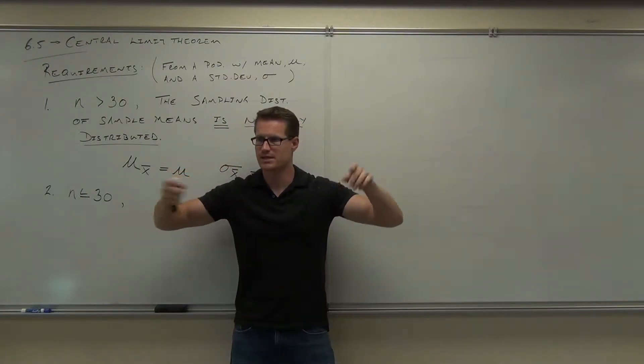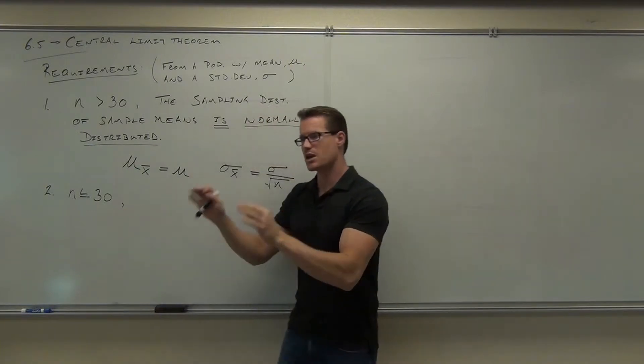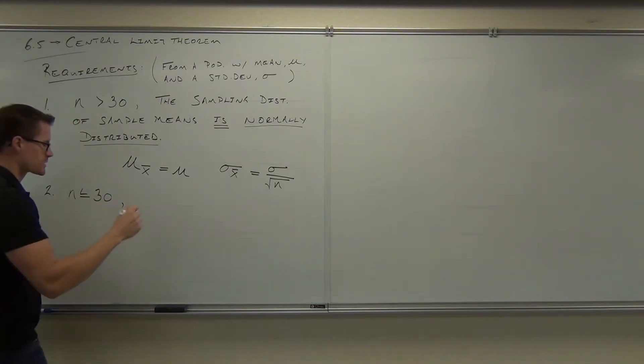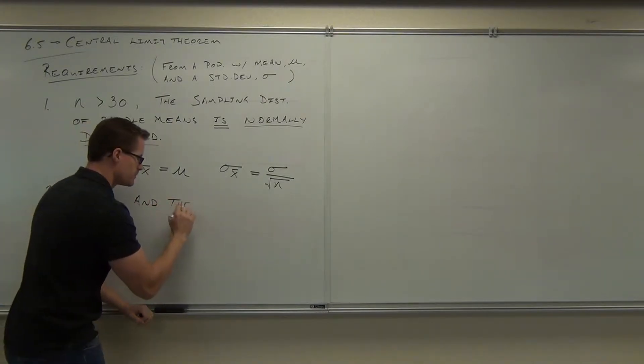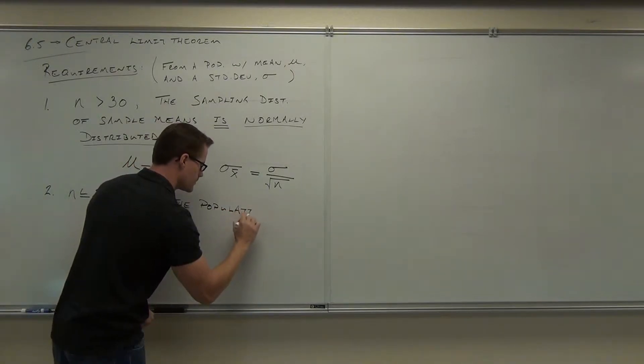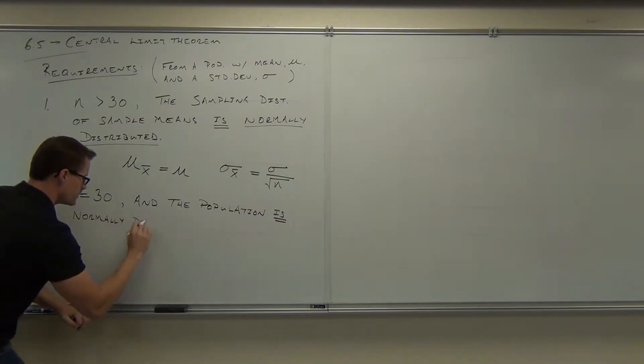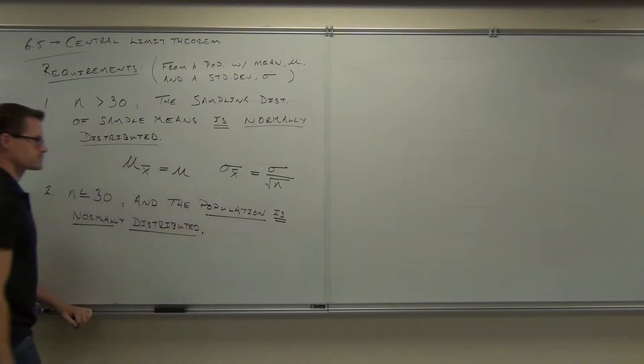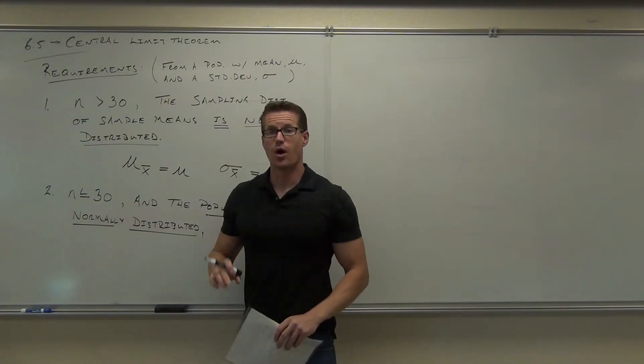If the population is normal, it should make sense that the samples are going to be normal when put in a distribution. Do you follow that logic? If the population is already normal, I take samples. No matter what the sample size is, organize them in the chart. After I find each of those statistics, you're going to get a nice bell-shaped curve again, if it's coming from a normally distributed population.